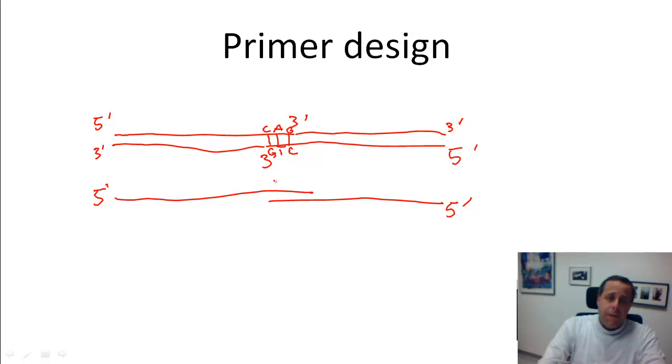What will happen if your primer ends with a palindromic sequence like G, A, T, C and the other copy of the primer will also end by G, A, T, C. Can you see what happens?